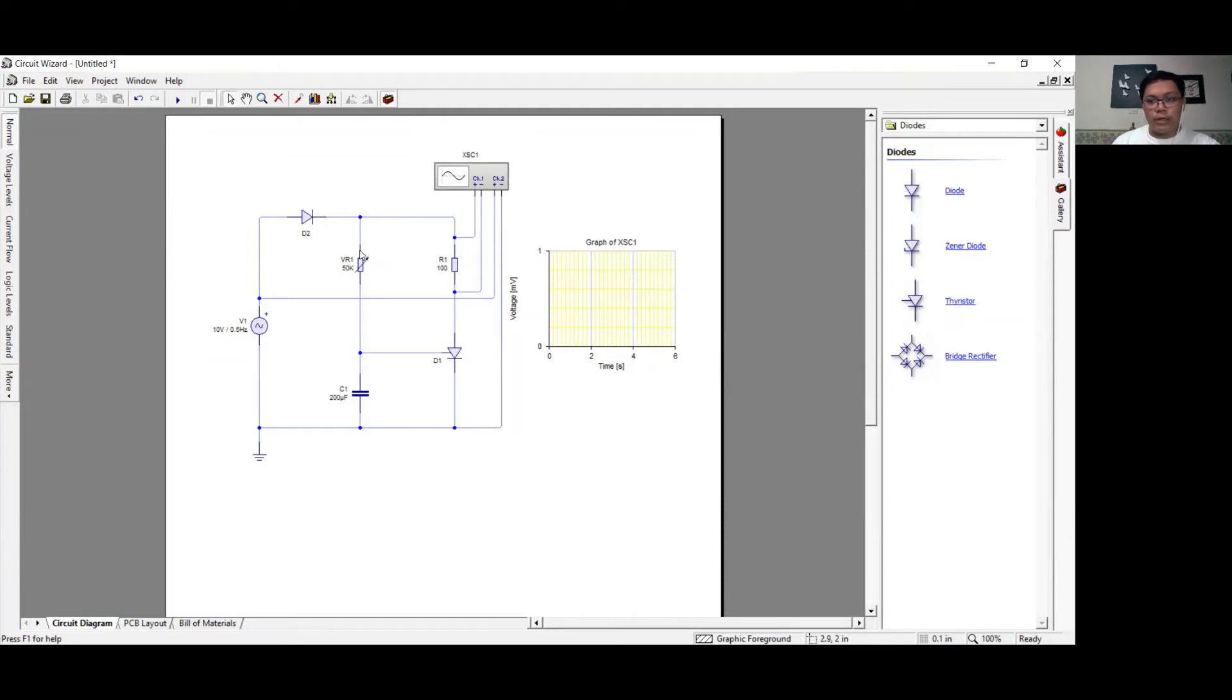The variable resistor R1 is put here because it affects the minimum supply voltage required to turn on the SCR. The greater the resistance of the variable resistor, the greater the supply voltage needed to turn on the SCR. Likewise, the lower the resistance, the lower the minimum supply voltage needed to turn on the SCR.